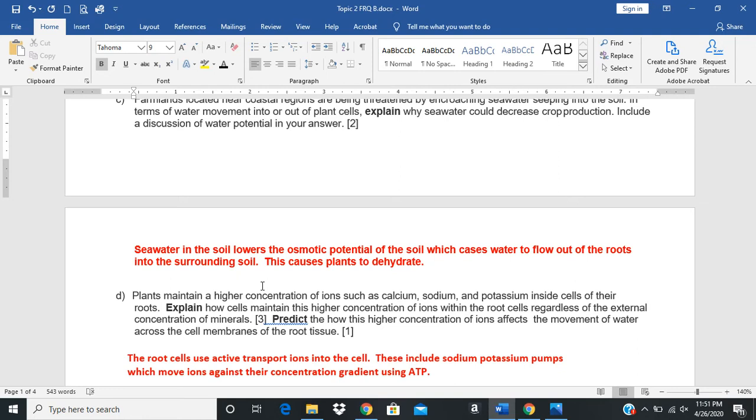Letter D talks about plants maintaining a higher concentration of ions such as calcium, sodium, and potassium. How do cells maintain this? As soon as you see 'maintaining a high concentration,' you should be thinking active transport. These cells are going to use some kind of mechanism to move ions against their gradient, and that's exactly what they do - they're using active transport. This is going to include things like sodium potassium pumps which are moving ions against their concentration gradient using ATP.